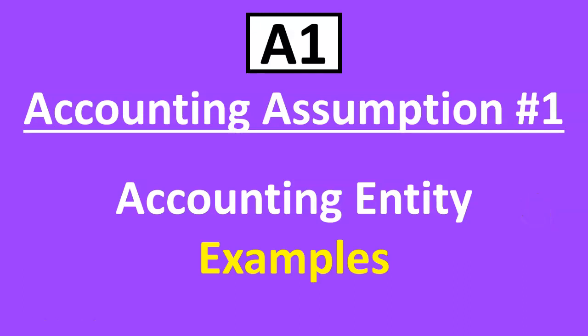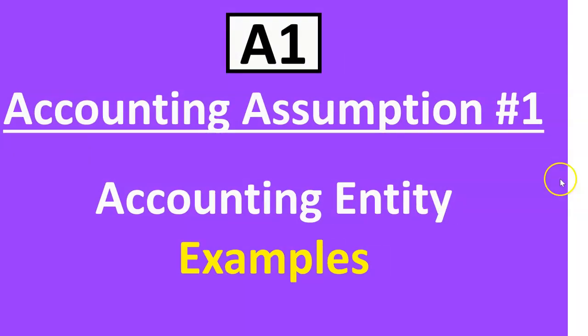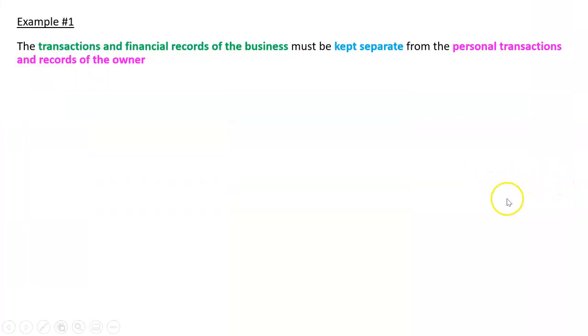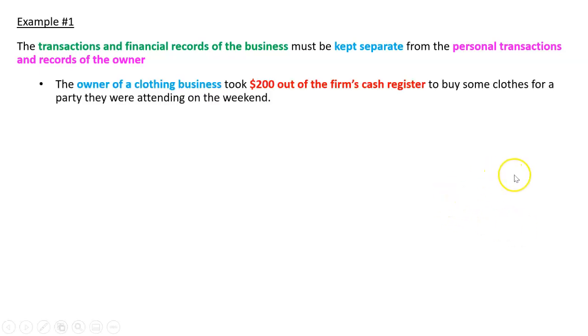Let's look at some ways to apply the accounting entity assumption. Example one: the transactions and financial records of the business entity must be kept separate from the personal transactions and records of the owner.